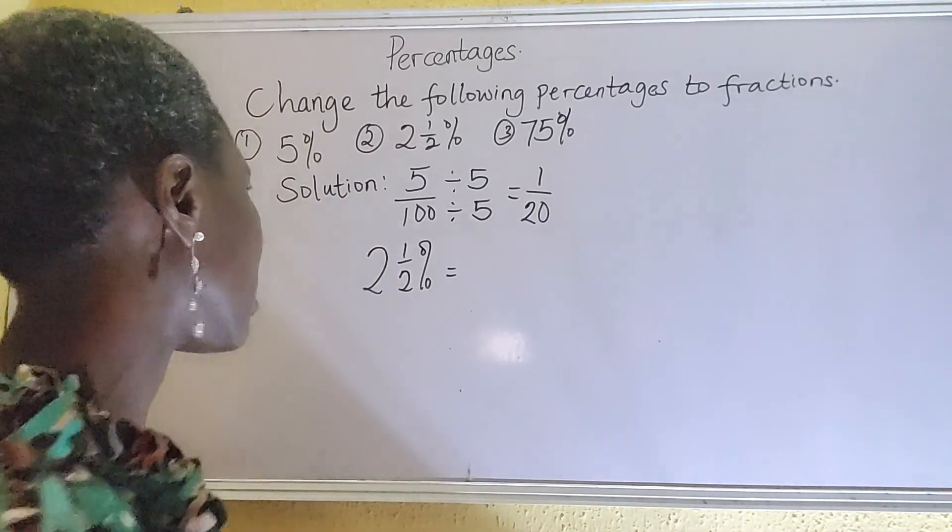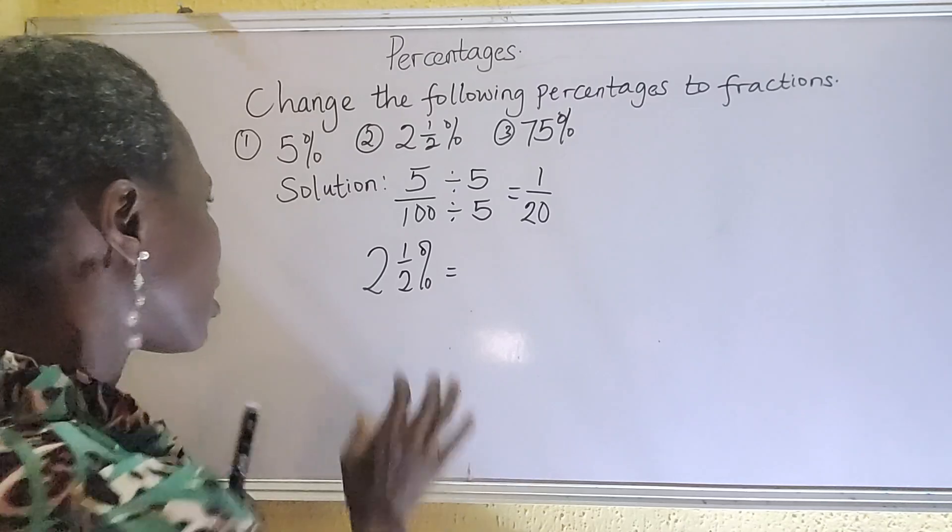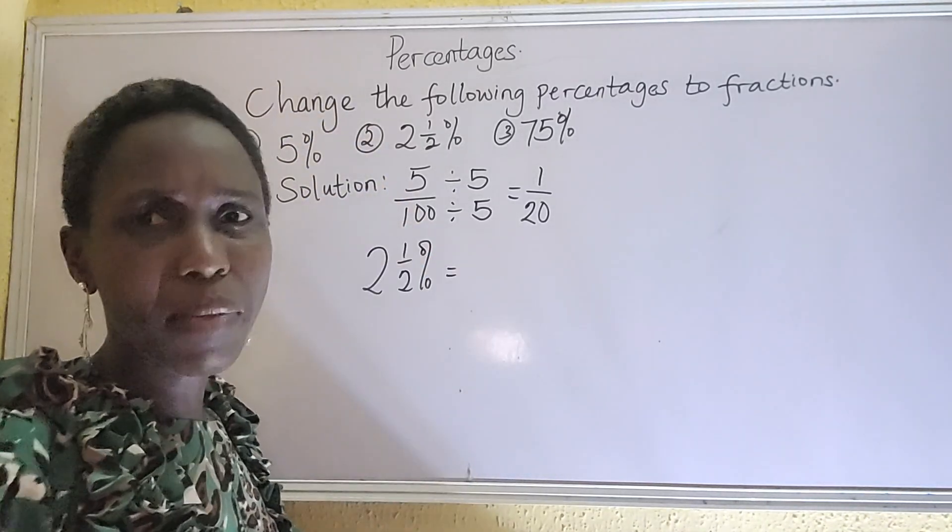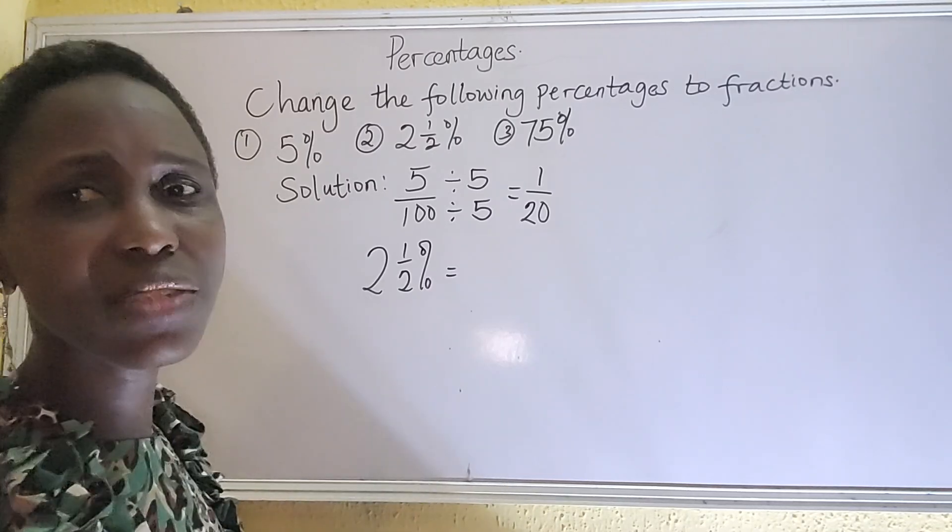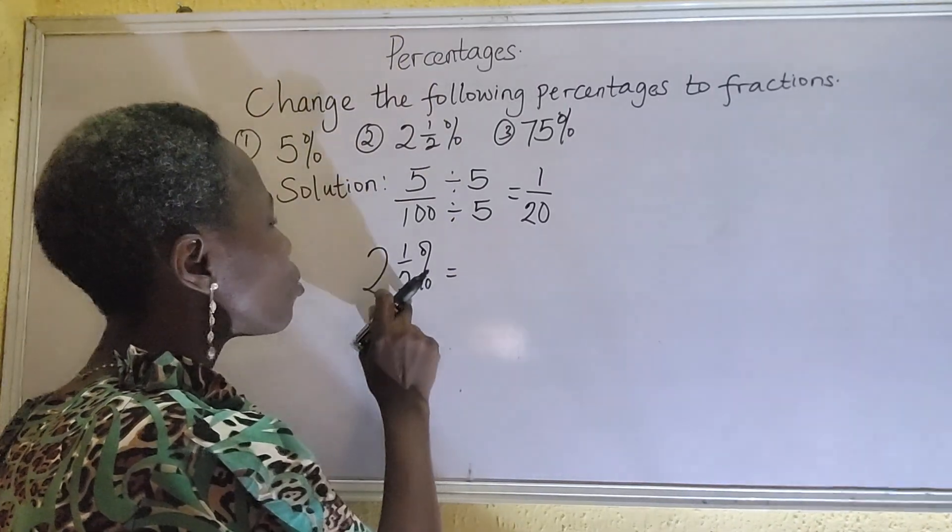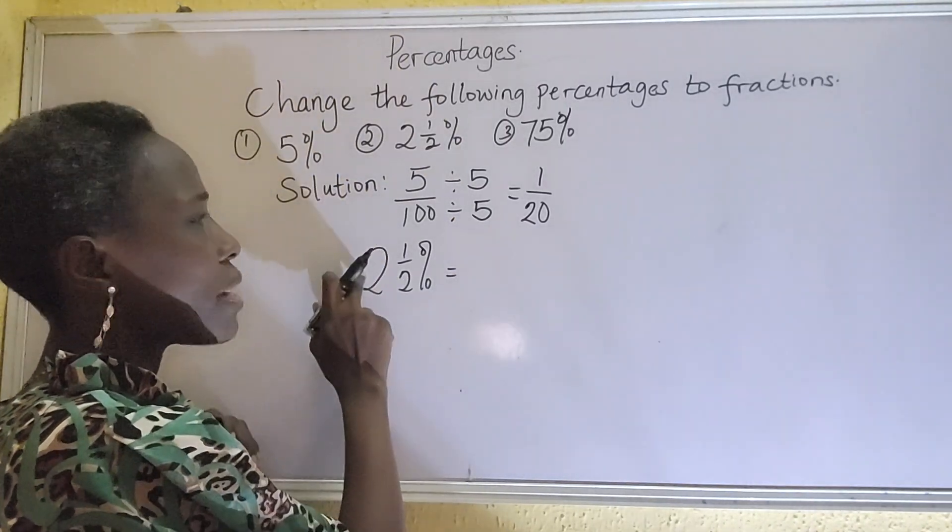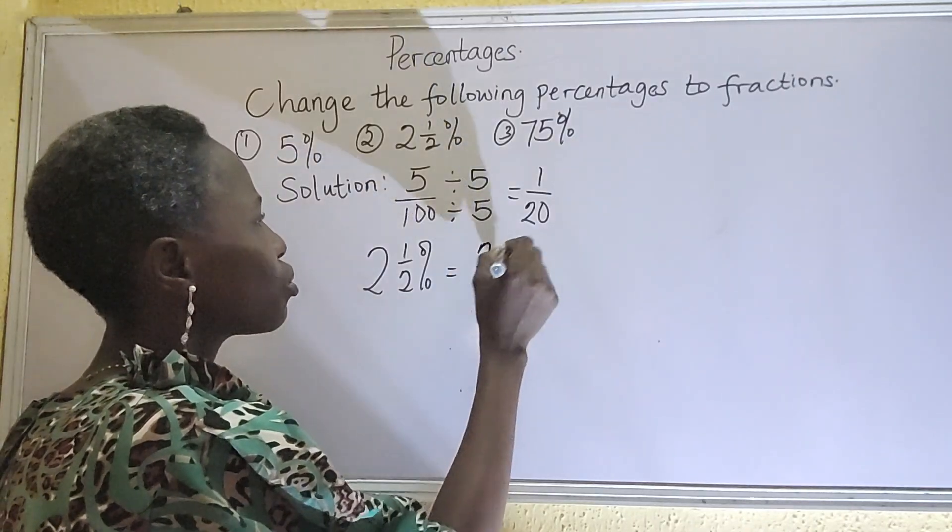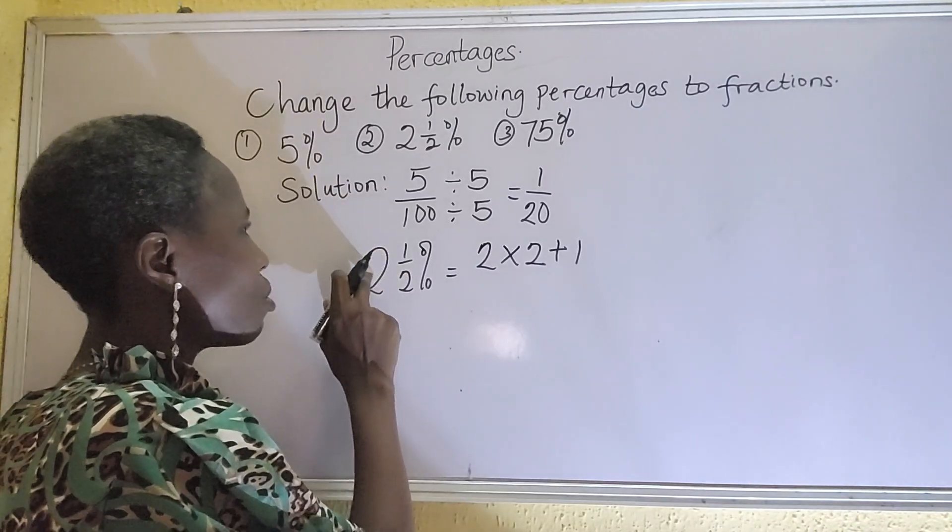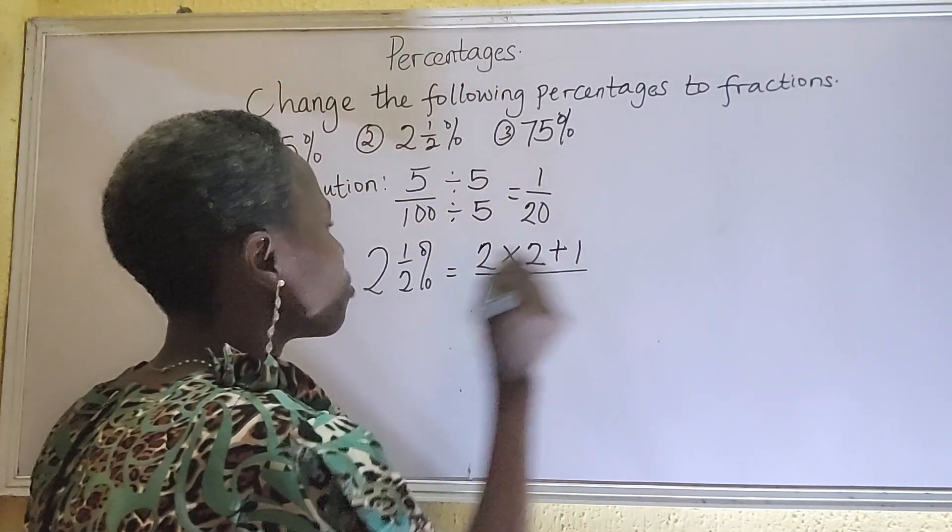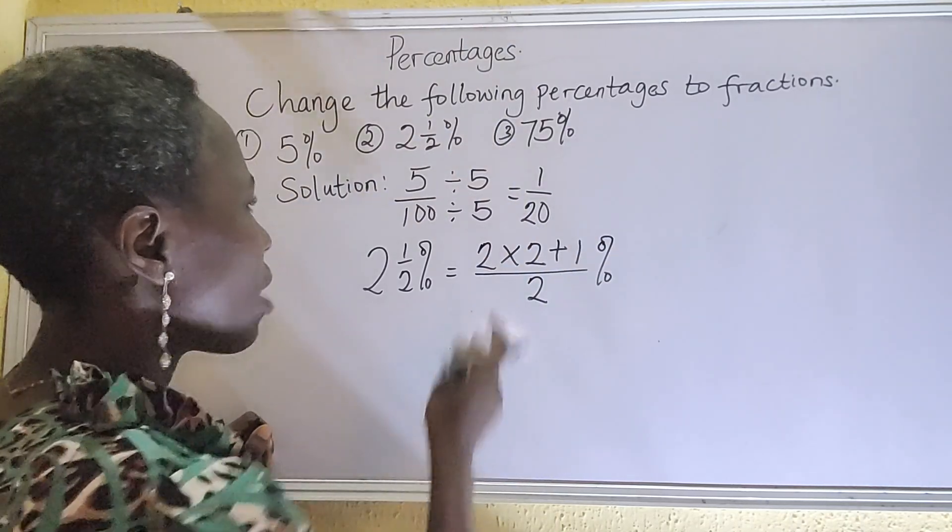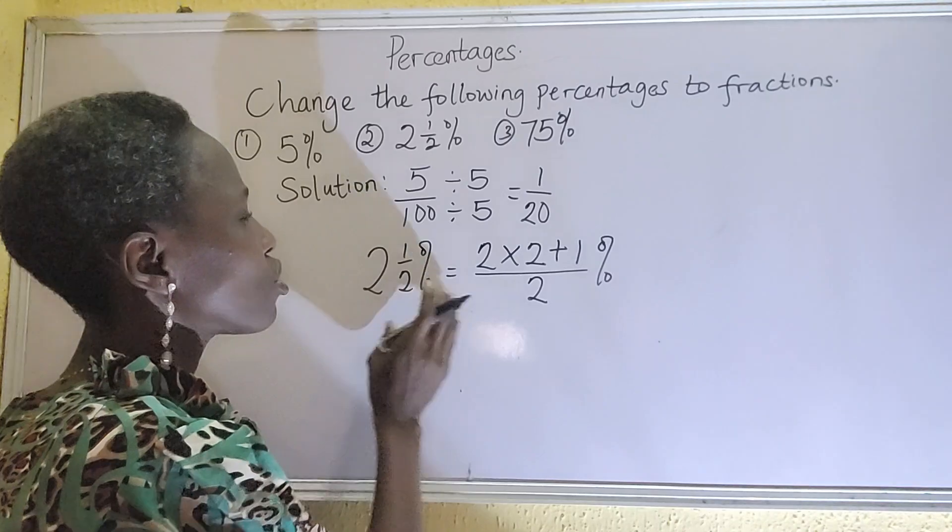How do we get this converted? Let's convert 2 and a half to improper fraction. The simplest way to convert from mixed number to an improper fraction is: the denominator multiplied by the whole number which is 2 times 2 plus 1, then everything will be over the denominator. Don't forget we are still on percentage. So we have 2 times 2 that's 4 plus 1 that's 5, so we have 5 over 2 percent.